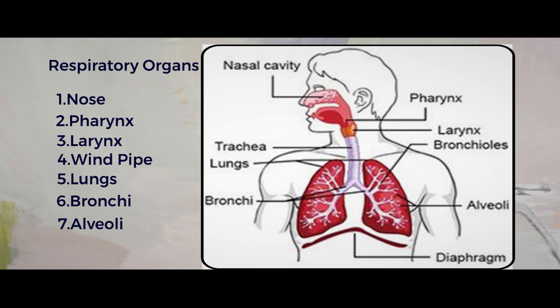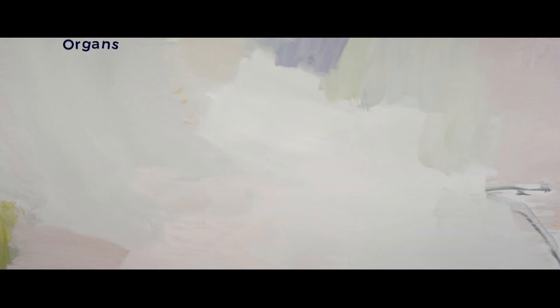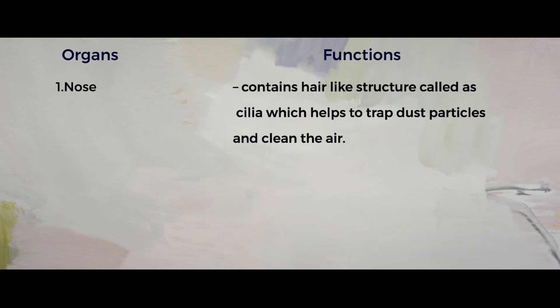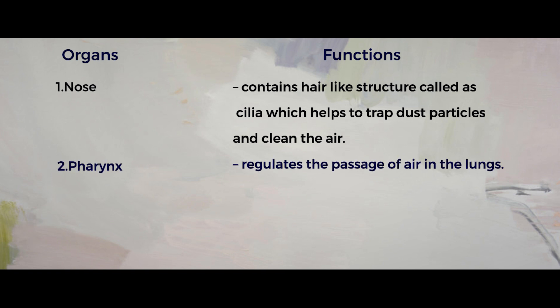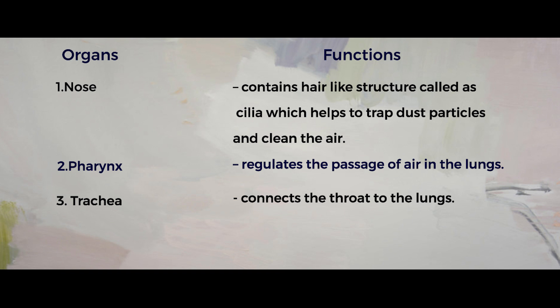Now let's talk about the functions of the respiratory organs. The nose is a pathway for air to enter and exit the respiratory system. The pharynx helps regulate the passage of air into the lungs. The trachea, or windpipe, helps air enter and exit the lungs, and it connects your throat to the lungs. The throat is a combination of the lungs and pharynx, and your trachea is there to connect these two parts.